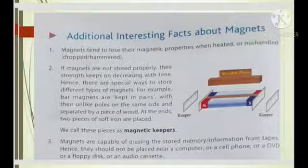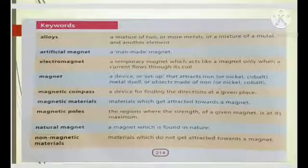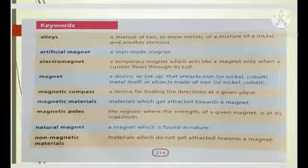Now we are proceeding towards the keywords. First one is alloys. Alloys are the homogeneous mixture of two or more elements. Next one is artificial magnet, is known as the man-made magnet, made by man. What are electromagnets? Electromagnets are the temporary magnet which acts like a magnet only when a current flows through its coil.